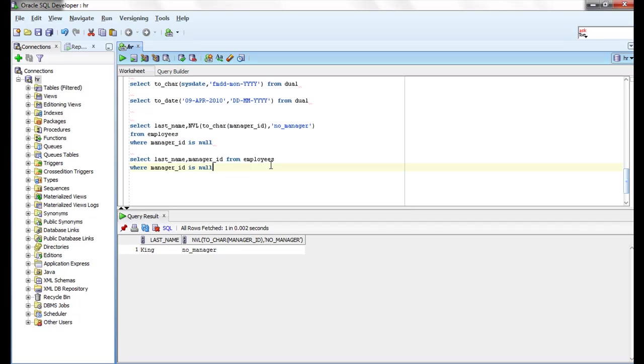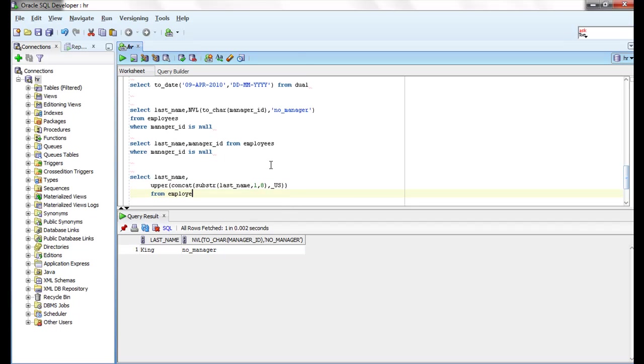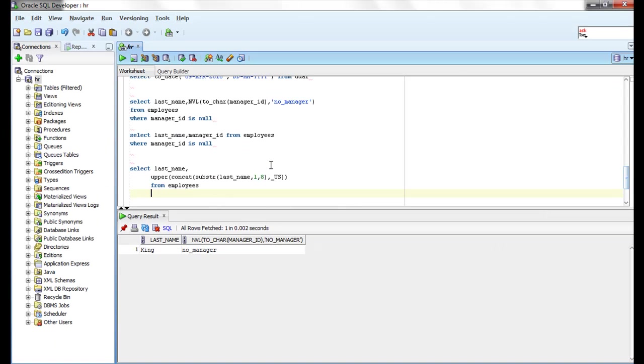Let me write this one. SELECT UPPER CONCAT SUBSTR LAST_NAME, 1, 8, underscore US, LAST_NAME FROM employees WHERE department_id equal to 60.